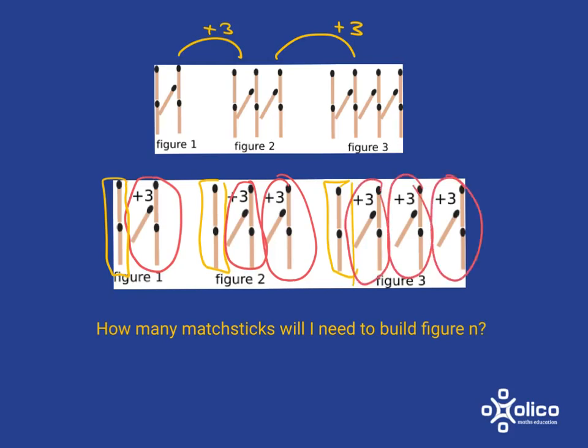For figure 4 it'll be those 2 plus 4 lots of 3. For figure 10, 2 plus 10 lots of 3. So for figure n it will be 2 plus n lots of 3, which we can write nicely algebraically as 3n plus 2.